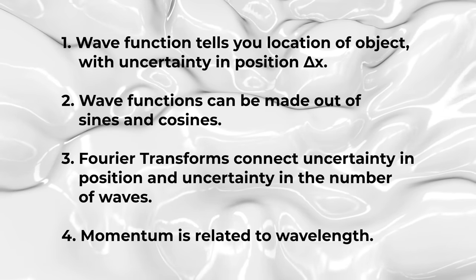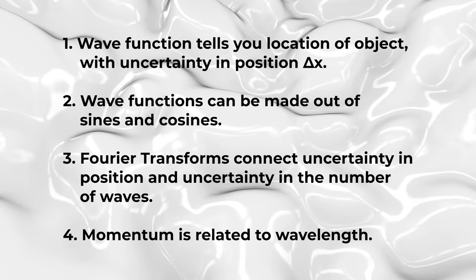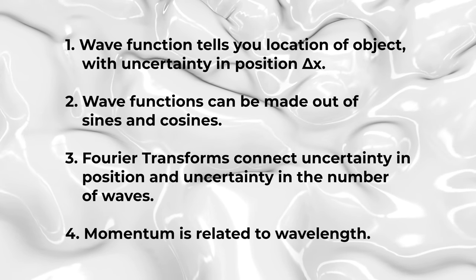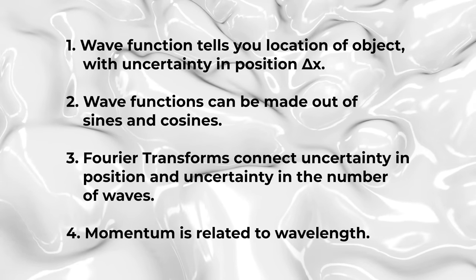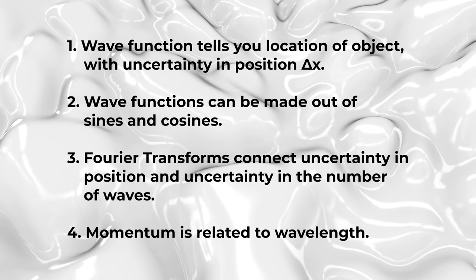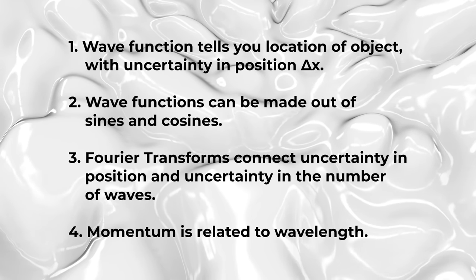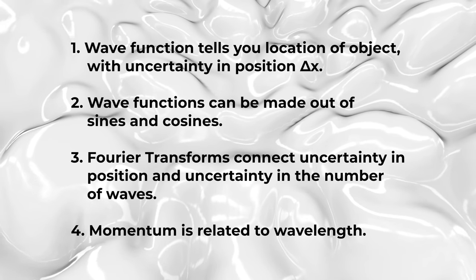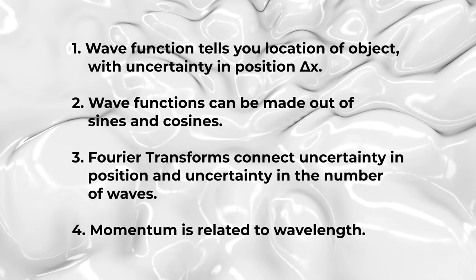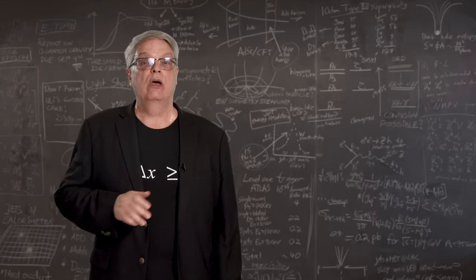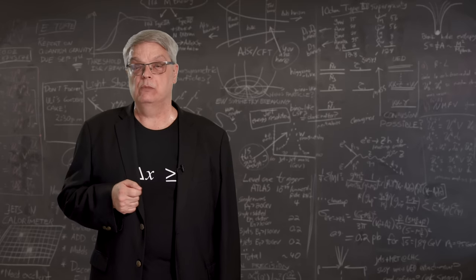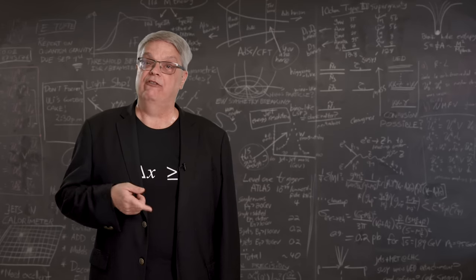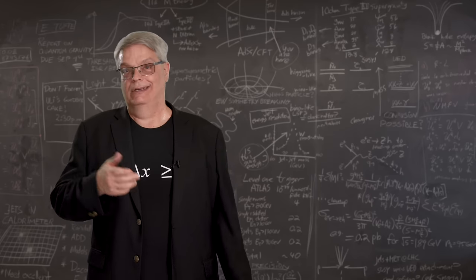So let's recap. One, a wave function tells you where a particle can be, and it has a range of possible locations that's called delta x. Two, any wave function can be built out of a sum of sine or cosine waves. Three, Fourier transforms shows that the range of locations and the range of waves are connected. Four, the momentum of a wave depends on its wavelength. When you combine these four ideas, you have everything you need to see where the Heisenberg uncertainty principle comes from. It's tied deeply into the principles of quantum mechanics and the fact that waves govern the quantum world, and you can't get around it.